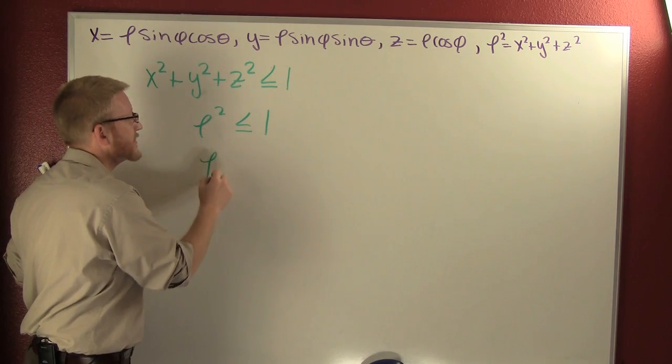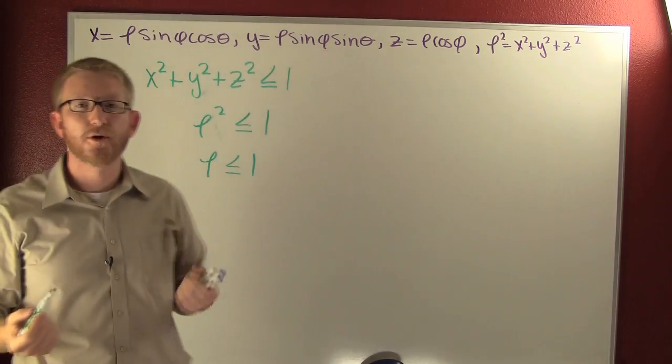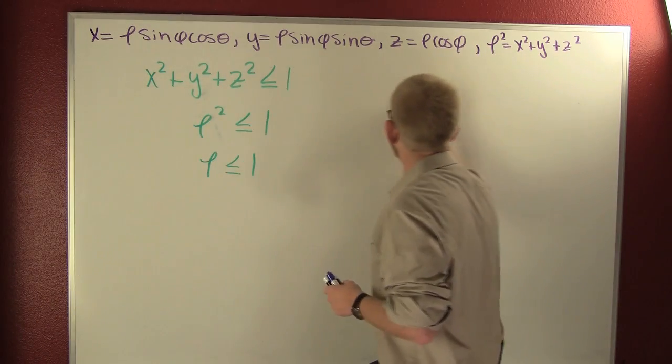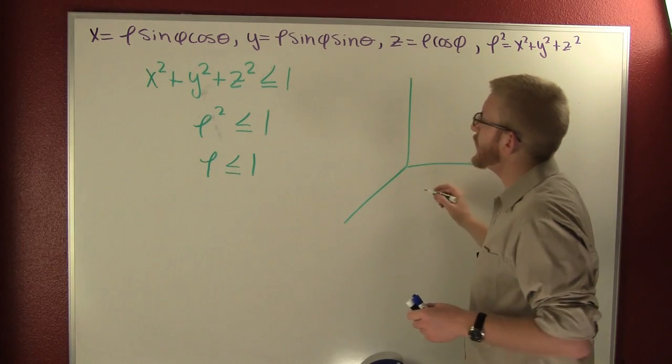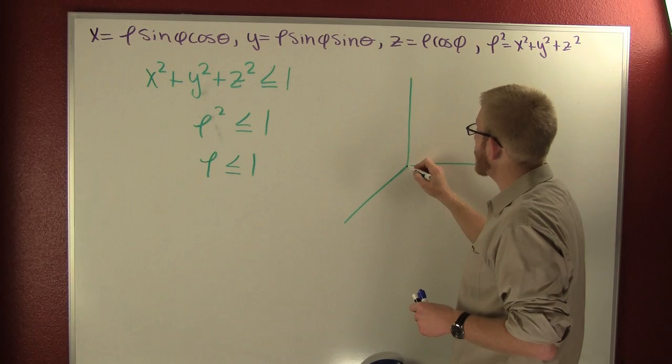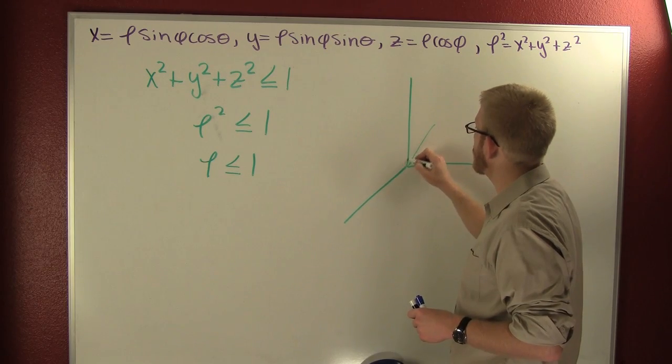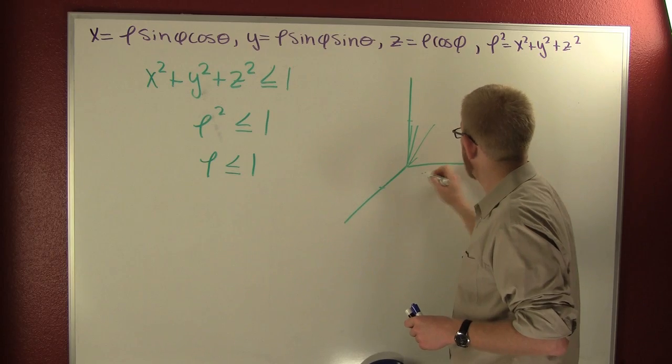So we see that ρ is going to be smaller than or equal to 1. What's ρ? ρ is the distance away from the origin. So we know ρ is going to be between 0 and 1 - it could be this little one, it could be this big one, it could be that one, it could be this one. The important thing is that ρ is in between zero and one.